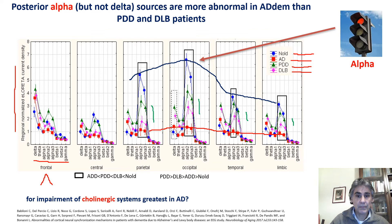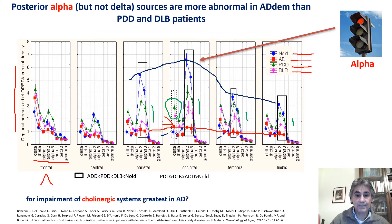In the delta range, there was low source activity in normal elderly subjects and an abnormal increase in Alzheimer's disease patients with dementia, especially in the occipital region. Even higher abnormal delta source activity was observed in Parkinson's disease and Levy Body disease with dementia. So Alzheimer's disease patients were characterized by a strong reduction of alpha source activity, while Parkinson's disease and Levy Body disease patients were characterized by an abnormal increase of delta source activity.